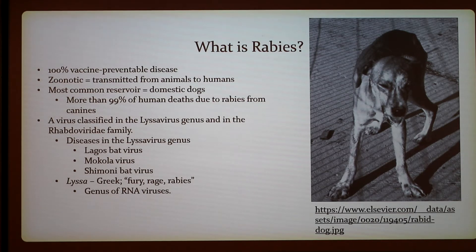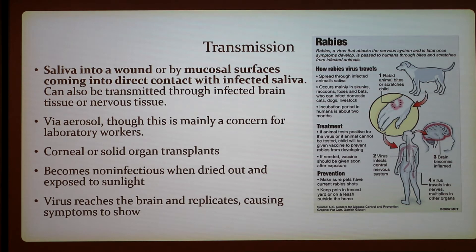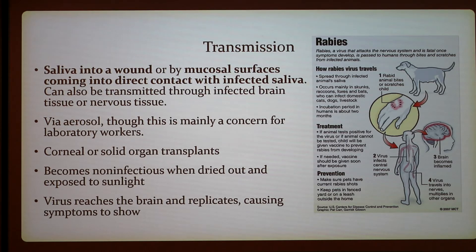Transmission is usually from saliva entering an open wound or bite, or through mucosal surfaces coming into direct contact with infected saliva. It can also be transmitted through infected brain or nervous tissue, though that's likely uncommon. Aerosol transmission is mainly a concern for laboratory workers, and it can also be transmitted through corneal or solid organ transplants, which has occurred before due to undiagnosed cases.